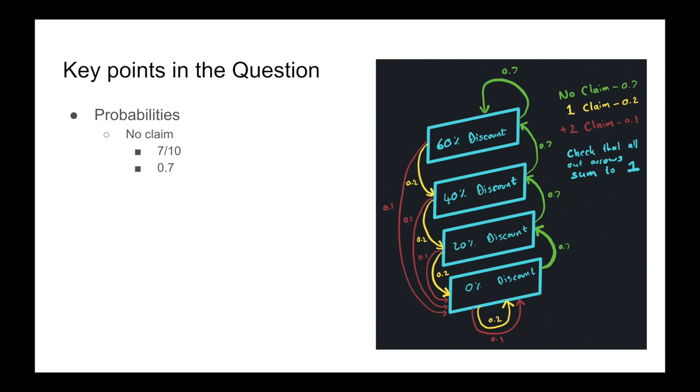Or I like to just put it into decimal format, which is 0.7. So every time there's the green, I've got 0.7. One claim, that is the yellow, that's one divided by five, or let's get it back into decimals, 0.2. And you can see all the yellows are now 0.2. And then two claims or more, we have it with the red number, one divided by 10, 0.1 in the decimal format. And like I say, I like to put it into decimals, because then it's easier to check that they all sum to one.